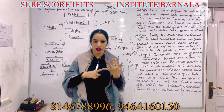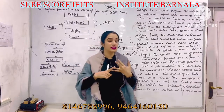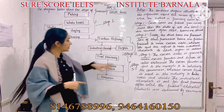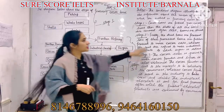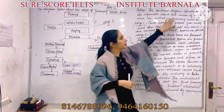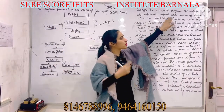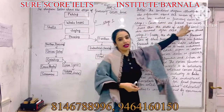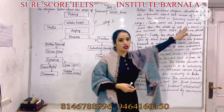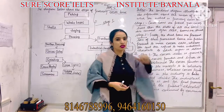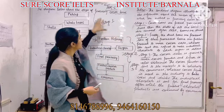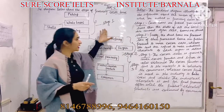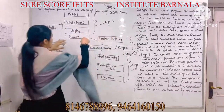In a process chart, either steps or stages will be given to you. Here we clearly have three stages, so we will write about the number of stages which are involved in processing cocoa beans. Now we are going to start from stage one.